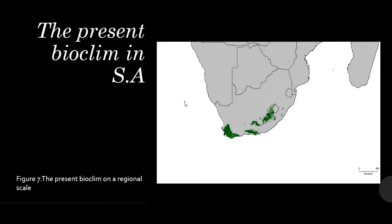This slide shows the present bioclim distribution in South Africa. The distribution is interpreted from current climate data resulting from the bioclim ecological model, which considers the environmental envelope. The parts most suitable for the distribution of Umbrella Pine are mostly in the Western Cape and in some parts of the Eastern Cape, and also in the city, though the city is not part of South Africa.